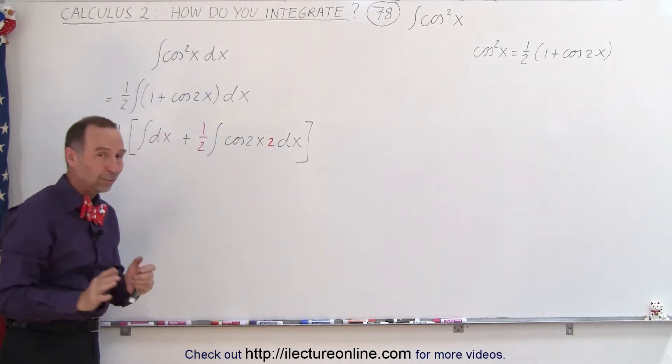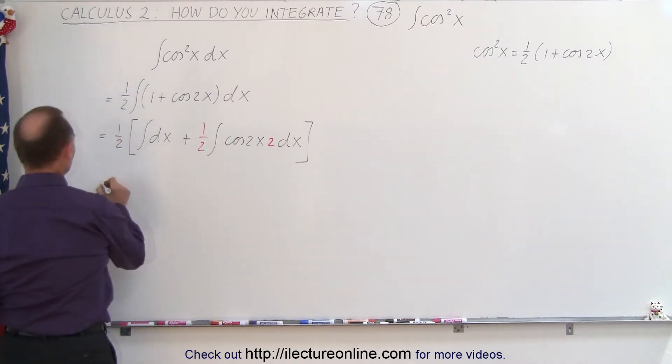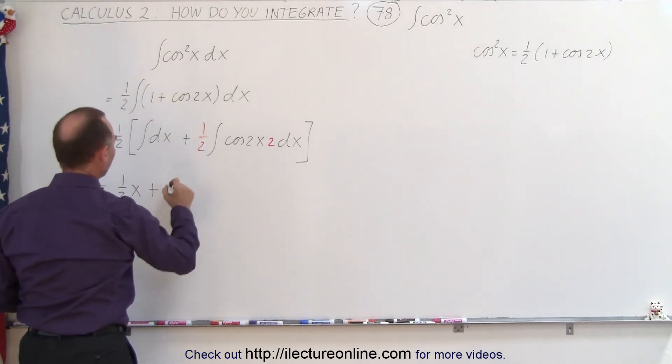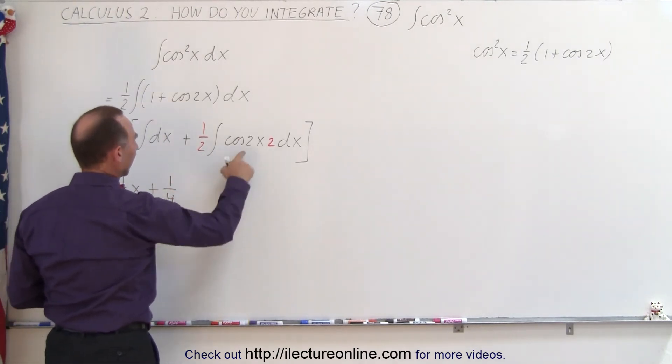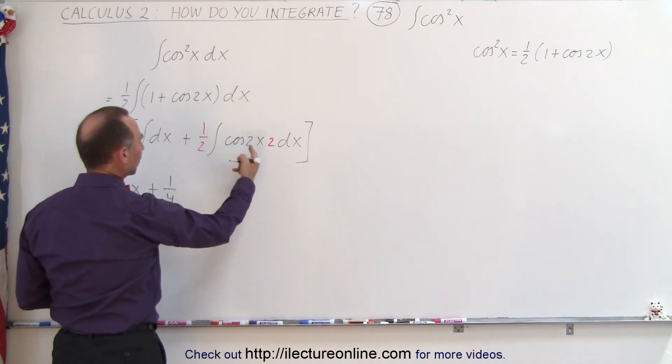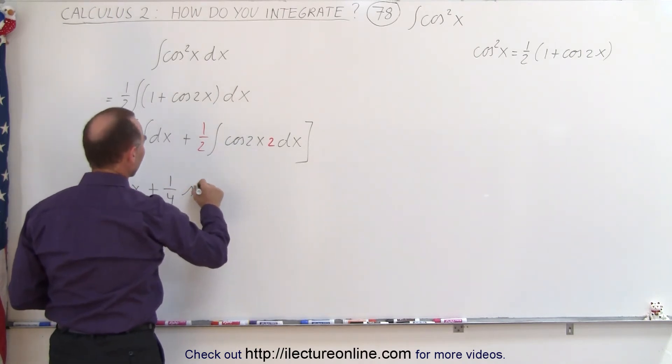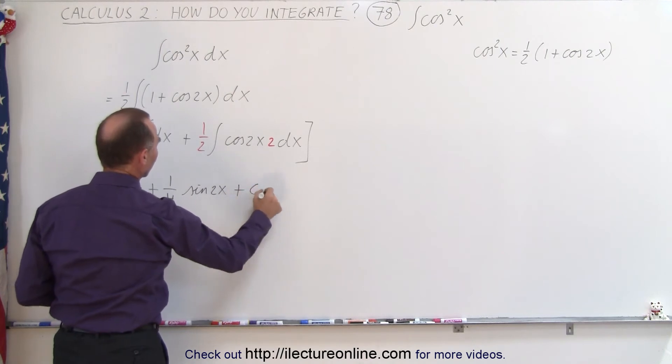And now we can go ahead and integrate both integrals. So this is equal to 1 half times the integral of dx, which is x, plus 1 half times 1 half, which is 1 quarter, times the integral of the cosine of 2x, which becomes the sine of 2x, plus a constant of integration.